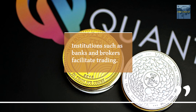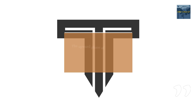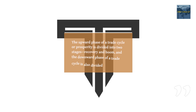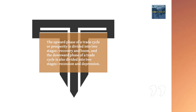Institutions such as banks and brokers facilitate trading. A full trade cycle has four phases: recovery, boom, recession, and depression. The upward phase of a trade cycle, or prosperity, is divided into two stages — recovery and boom — and the downward phase is also divided into two stages — recession and depression.